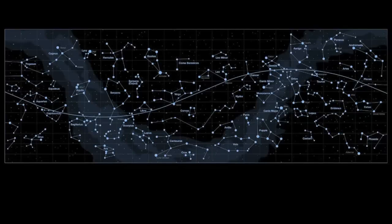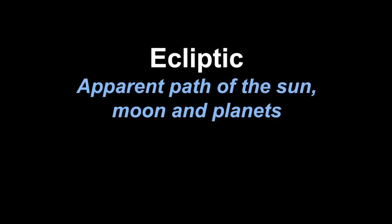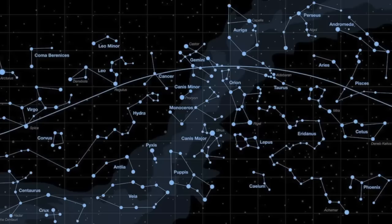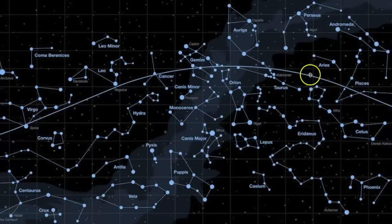Another thing you might notice when looking at a star map is the line that goes from one side to the other. This line is known as the ecliptic, and it is the apparent path of the sun, moon, and planets. The path of the sun has been recorded over thousands of years of human observation. Any constellation that falls along the ecliptic is defined as a zodiacal constellation.